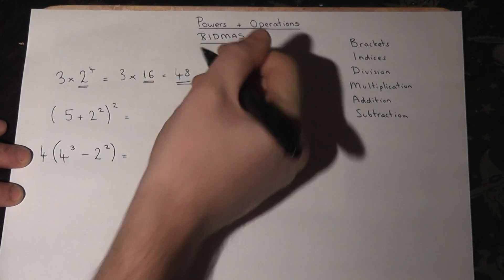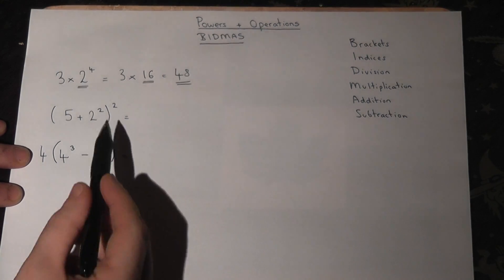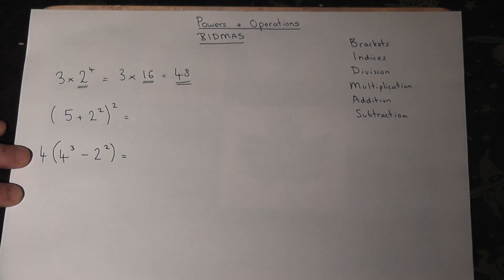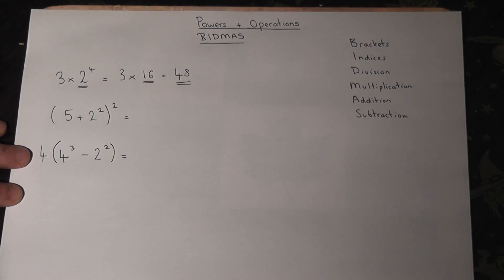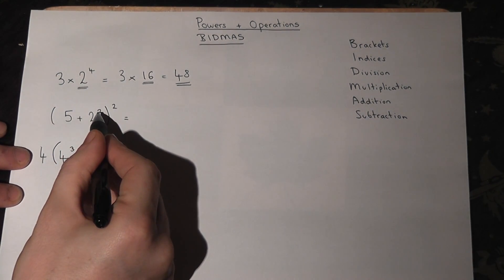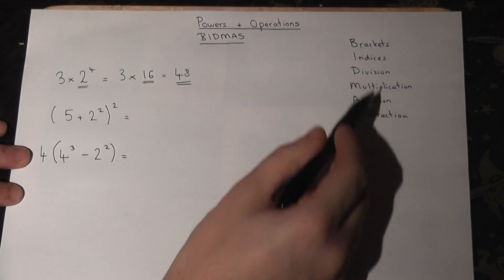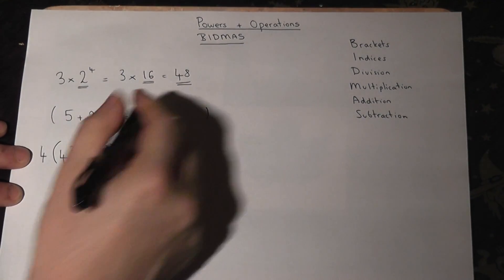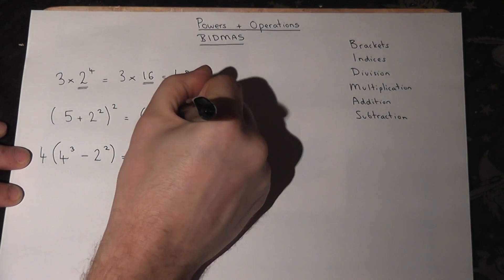So the second one, there's lots of things there, and the point is that we always work out brackets first which means do what's in the bracket. Let's work out what's in there first of all. So in there is a five and a two squared, there's an addition and a power. Well powers come way before addition so we have to do the two squared first. So let's put a bracket there, we leave the five and two squared is two times two which is four, so five plus four.